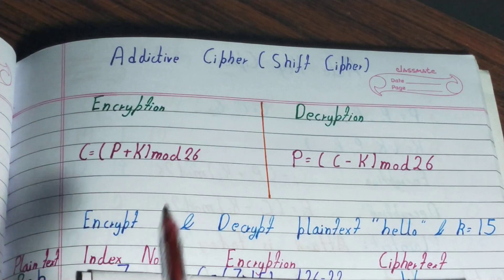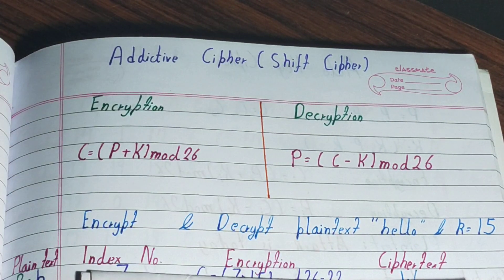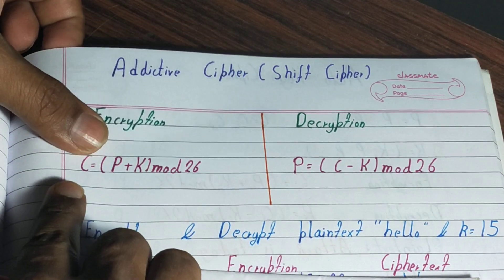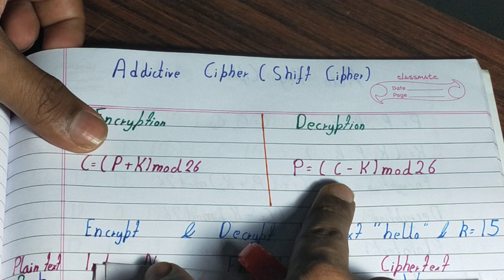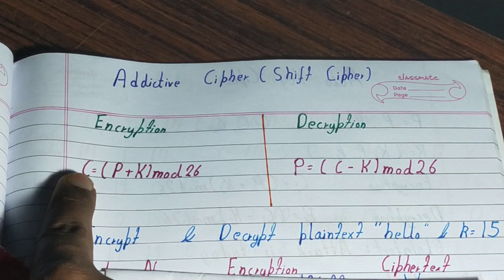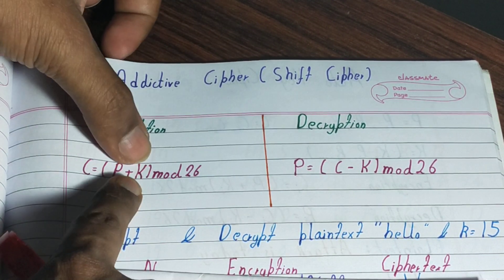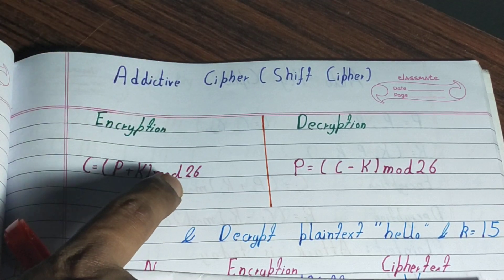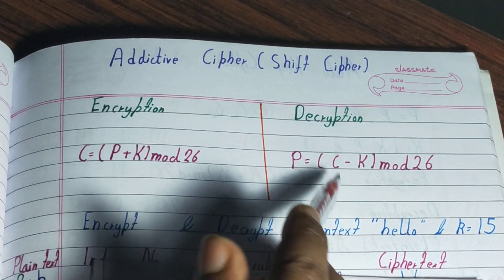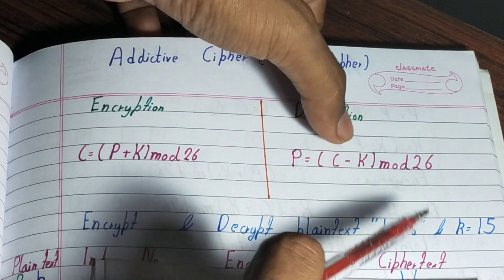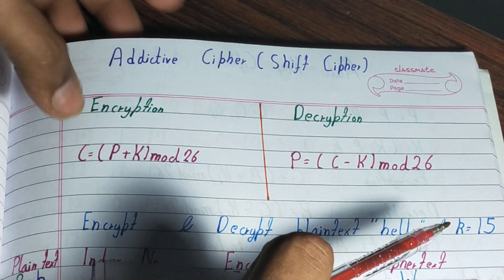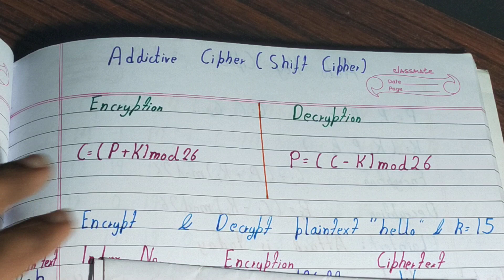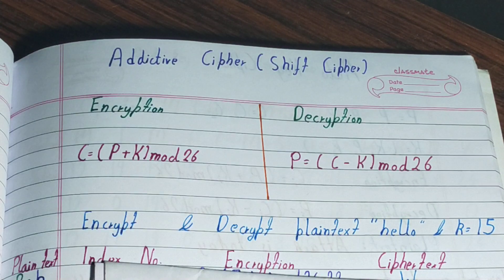Hello friends, in this video I'll be helping with additive cipher or shift cipher — both encryption and decryption process. Here is the formula for encryption and here is the formula for decryption. For encryption, ciphertext equals plaintext plus key k, mod 26. For decryption, we do just the opposite — we subtract the key from the ciphertext.